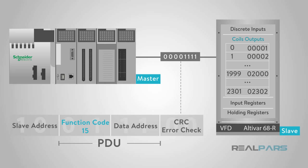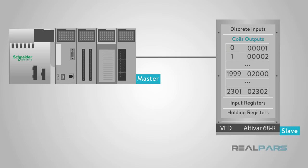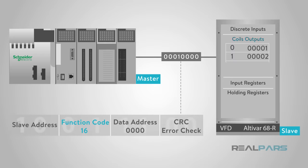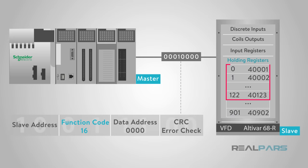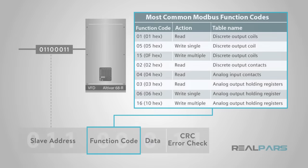The request PDU specifies the coil's memory address to be forced on or off. Function code 16, WriteMultipleRegisters, is used to write a block of contiguous registers — 1 to 123 registers — in a remote slave device. While these Modbus function codes represent the most common read and write functions, it would be helpful to review the Modbus specification for additional information.